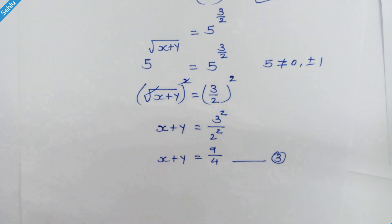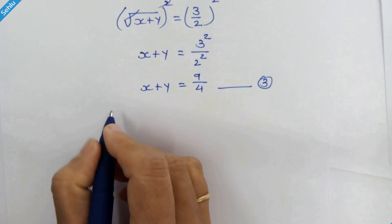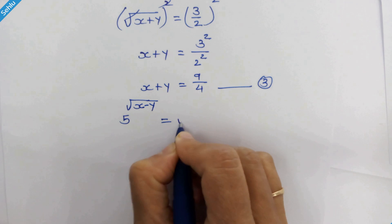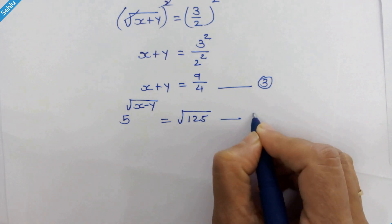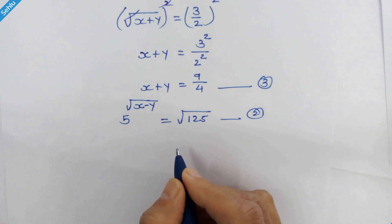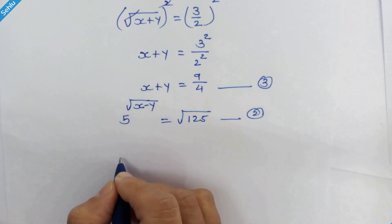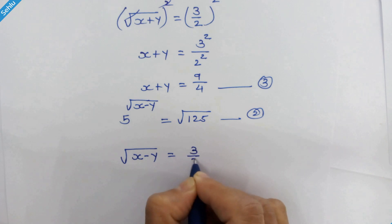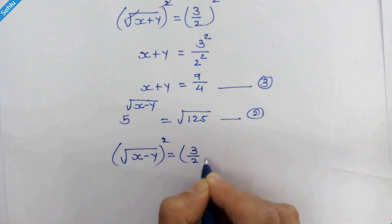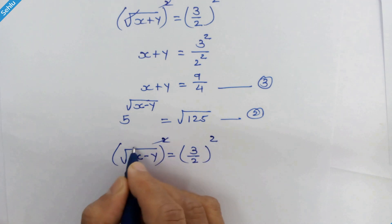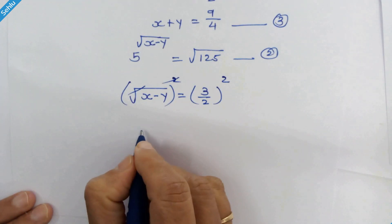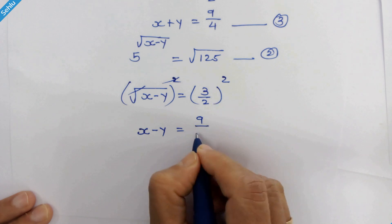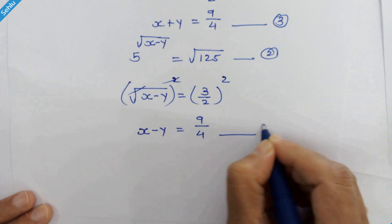Now let's look at equation 2, which is 5 raised to √(x−y) is equal to square root of 125. We follow the same steps, which gives us √(x−y) = 3/2. Squaring both sides, x − y = 9/4. Let's call this equation number 4.